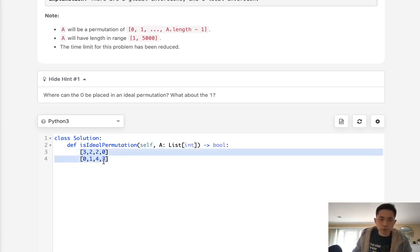So basically what we have to do is move through here and check the difference between the index number and the ideal position and if the difference, really the absolute difference is greater than one, we know that there's more than one global inversion.